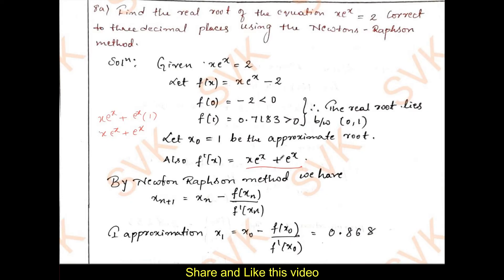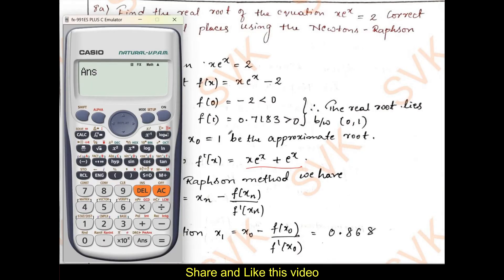Keep x as it is and differentiate e power x — derivative of e power x is e power x itself, plus e power x into derivative of x is 1. Therefore, we get x e power x plus e power x as f dash of x. Then we can proceed with the calculation.